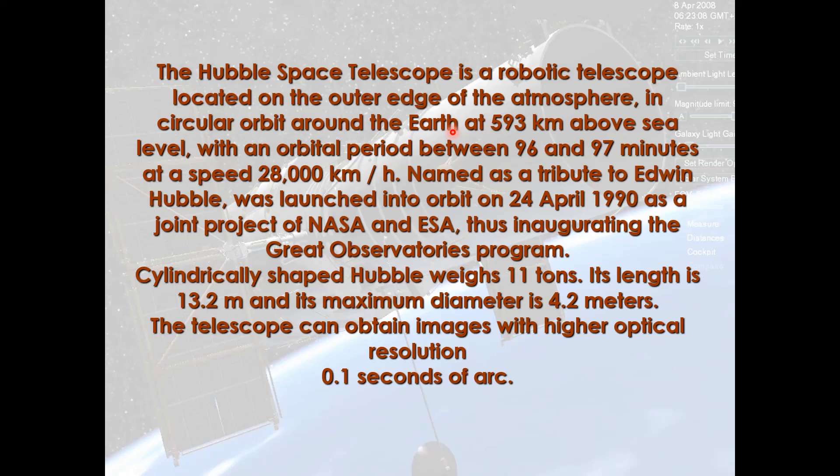Looking at the physical parameters of the Hubble telescope, its weight is around 11 tons, which is 11,000 kilograms. Its length is around 13.2 meters while the diameter is 4.2 meters, and it has a very high resolution optical camera placed inside it.